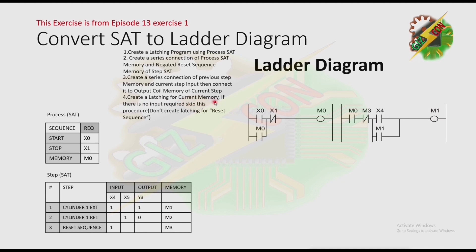Next, create a latching for the current memory. If there is no input required, skip this procedure. Do not create latching for the reset sequence. We already created a latching here for m1. Now we need to repeat procedure 3 until we finish all steps.